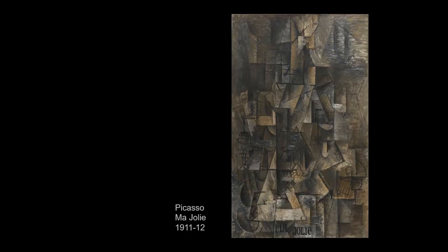They push boundaries even further. By 1911-1912 they're painting things that look purely abstract but aren't — for instance a painting of Picasso's lover Marcel Humbert, whose pet name was Ma Jolie, 'My Pretty,' the name of a popular song. It also has things like a treble clef, musical notes, symbols and references. It vaguely has a sense of a form and a sense of depth, all with incredible complexity. People looked at this stuff and absolutely fell in love with it.